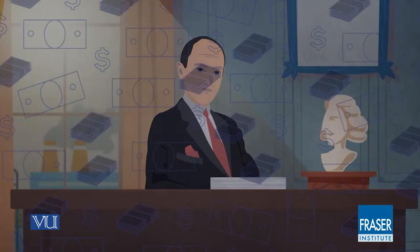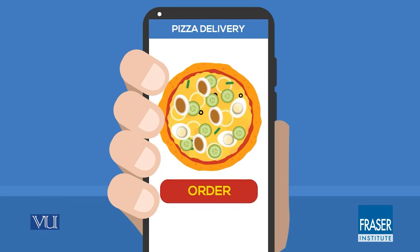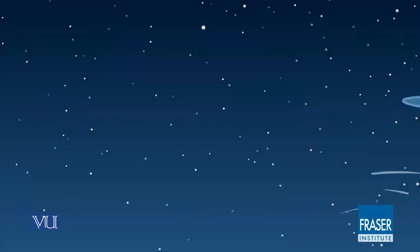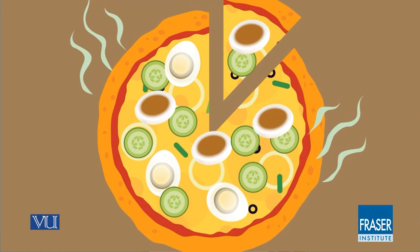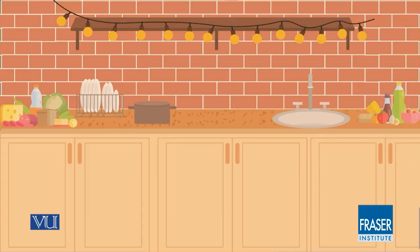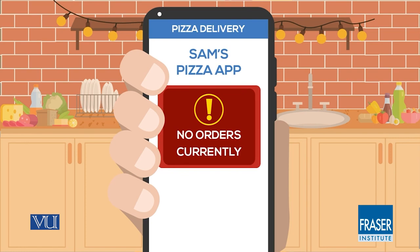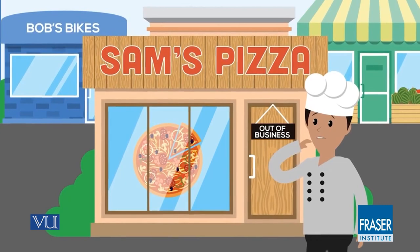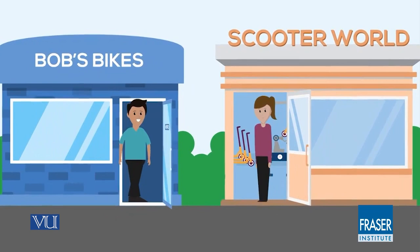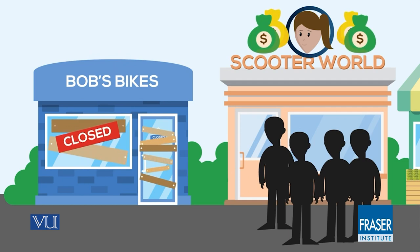Schumpeter also addressed the role of profits and losses in entrepreneurship. If a new idea — new pizzas and how they're delivered — motivates customers to buy at prices sufficient to cover costs, then it's successful. On the other hand, if a new pizza topped with pickles and rotten eggs is put up for sale but people don't buy it, the financial losses signal it doesn't meet customer wants and needs, and the business eventually closes. The prospect of profits leads entrepreneurs to innovate, but financial losses equally help guide entrepreneurs and resources towards successful endeavors.